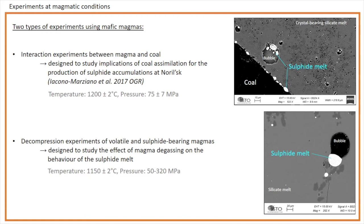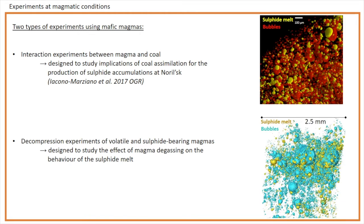The top image illustrates interaction experiments between magma and coal, designed to study how coal assimilation by magma may favor the production of sulfide accumulation at Norilsk. The bottom image shows decompression experiments of volatile and sulfide saturated magmas, designed to investigate the effect of magma degassing on the behavior of the sulfide melts. Although the mechanisms triggering degassing are markedly different, as well as the composition of the fluid phase and the oxygen fugacity, in both cases micro-CT renderings show a strong association between the sulfide melts and the fluid phase.